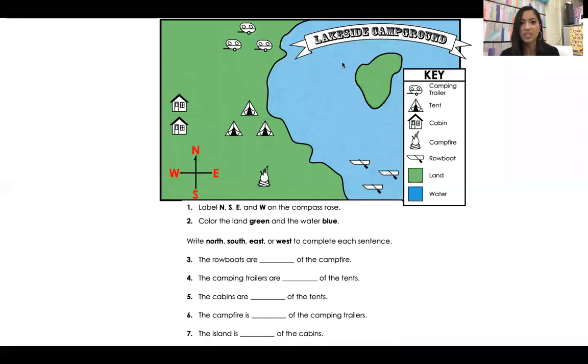So I'm going to do a quick activity just to show you how to use the map key and how to use our compass rose once again. So we're going to skip these two because they're already done and we're going to go down to number three. And it says the rowboats are blank of the campfire. So here is my campfire. The rowboats are here. Are the rowboats north of the campfire? Are they south of the campfire? Are they east or are they west? If you said east, you are correct.